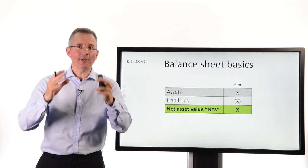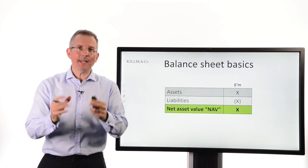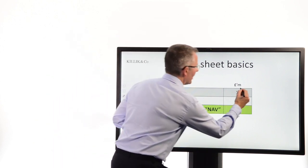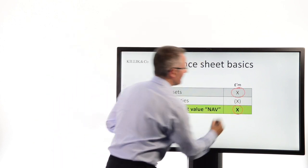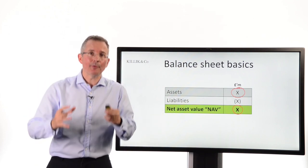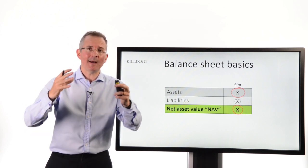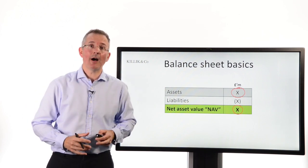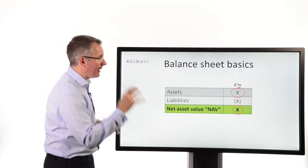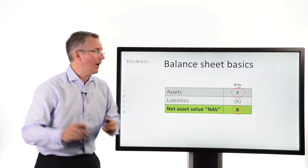Now this is not the balance sheet basics video, but as a snapshot, what that means is essentially the bigger a firm's assets, the bigger its overall NAV. The bigger a firm's liabilities — assets, by the way, are the investments that it owns, so if you're looking at a fund it's the portfolio of investments bought on your behalf at their latest market value — the bigger those are, the bigger the NAV. The bigger liabilities are, the smaller your NAV.